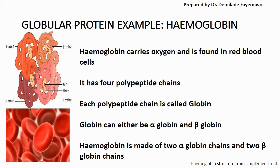An example of a globular protein is hemoglobin, which is very important in the human body — it carries oxygen and is part of red blood cells. Hemoglobin has four polypeptide chains, making it a quaternary structure. Each polypeptide chain is called a globin, which can be either an alpha globin or a beta globin. Hemoglobin is made of two alpha globin chains and two beta globin chains, all associating together to form its quaternary structure.